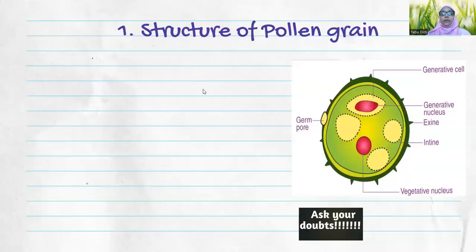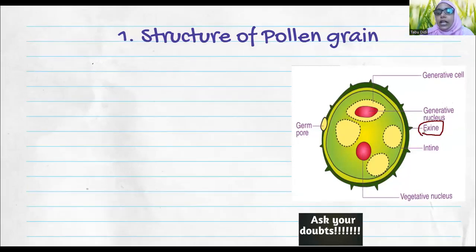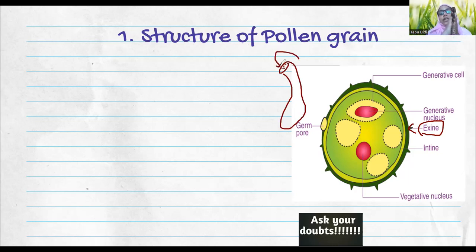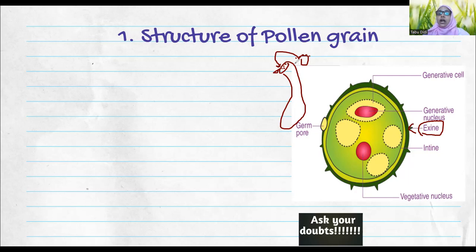This is how a typical structure of a pollen grain will look like — outer layer, inner layer, nucleus, and so on. Let's begin with the outer layer, known as exine. The exine may have spikes or thorny-like structures. These spiky structures help it attach to the stigma — remember the female reproductive part of the flower. The stigma produces a sticky substance, so the pollen grains come and stick to it. The spiky structures on the exine support and encourage attachment to the stigma.